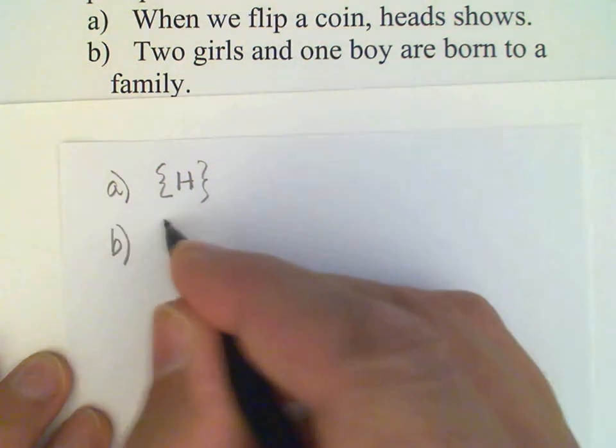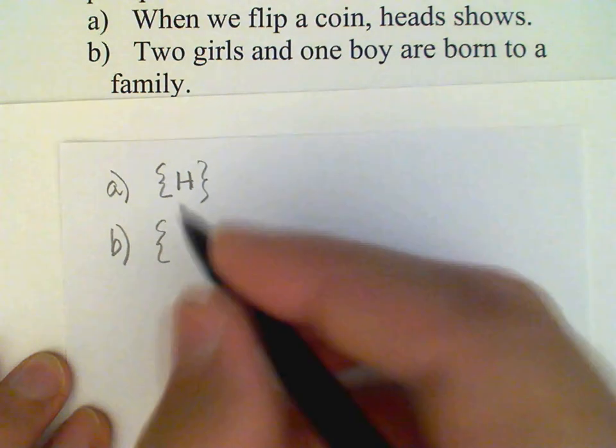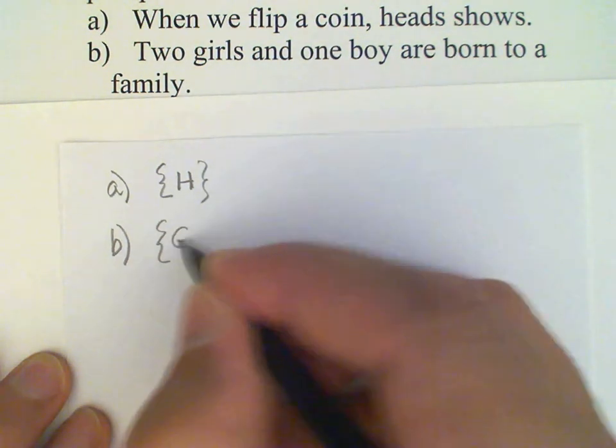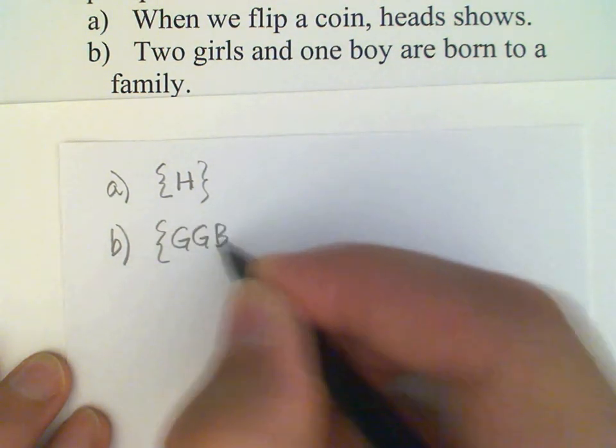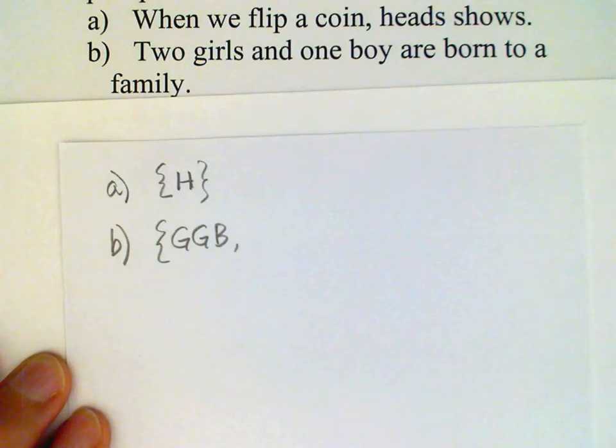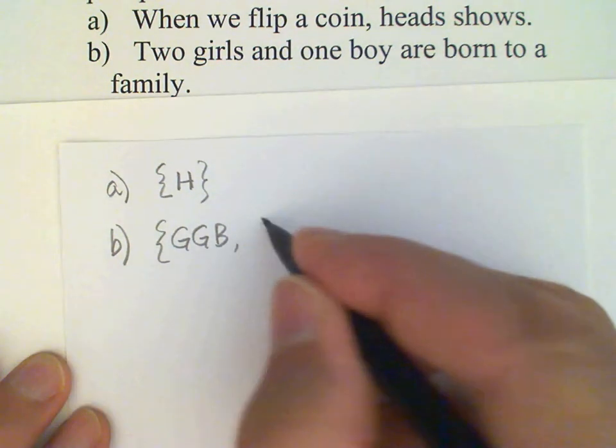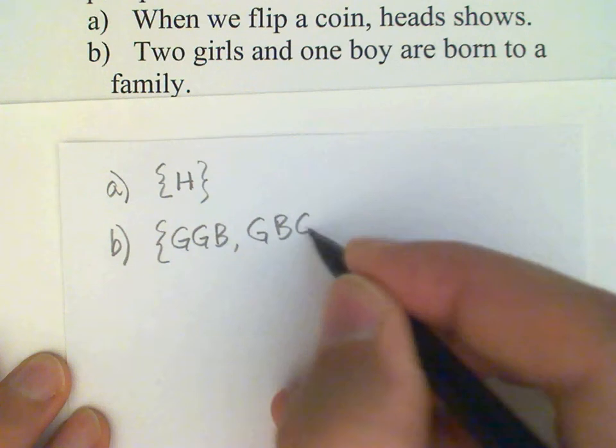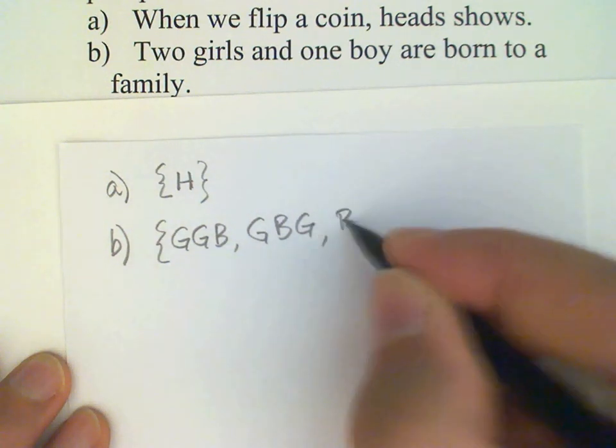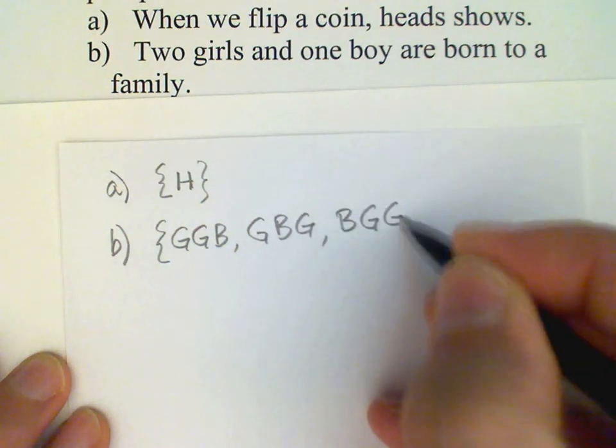So those are the outcomes we need to write down: girl-girl-boy (that's supposed to indicate that the boy is the youngest), and then girl-boy-girl, and boy-girl-girl (that indicates the boy is the oldest).